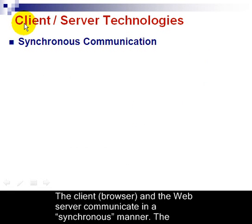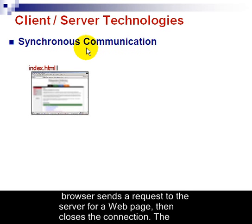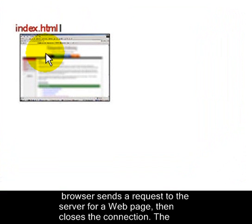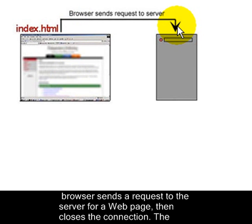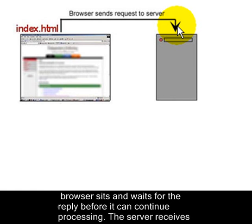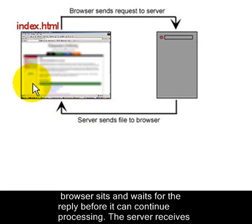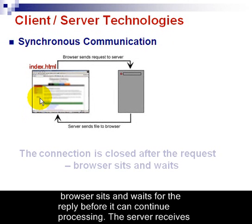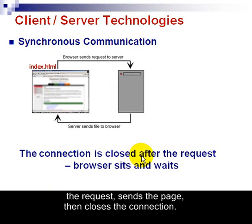In order to see how we have emerged over the years, we need to look at the basics of the client-server technologies and understand synchronous communication. The client or browser makes a request to the server, and once that request is sent, the connection is closed. The server receives that request and then sends something — generally a web page — back to the browser. That is called synchronous communication. The connection is closed after the request, and the browser must sit and wait until it receives the reply before it can continue any processing.